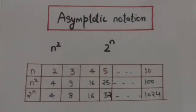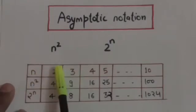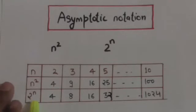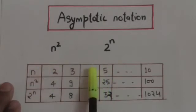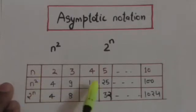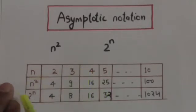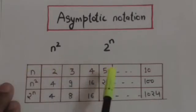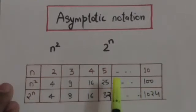Hello friends, welcome back. In this tutorial we will study about asymptotic notation. Consider two functions: n² and 2 raised to power n. As the value of n increases, 2 raised to power n increases faster than n². When n is equal to 4, both n² and 2 raised to power n equal 16. But when n is equal to 10, n² becomes 100 and 2 raised to power n becomes 1024.